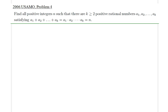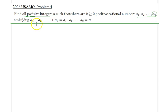Hello everyone. In this lecture we will be going over 2006 USAMO Problem 4. The problem asks: find all integers n such that there are k ≥ 2 positive rational numbers a₁, a₂, ..., aₖ satisfying certain equality conditions. The first thing that comes to mind is to apply the AM-GM inequality, since we have a summation and a product.